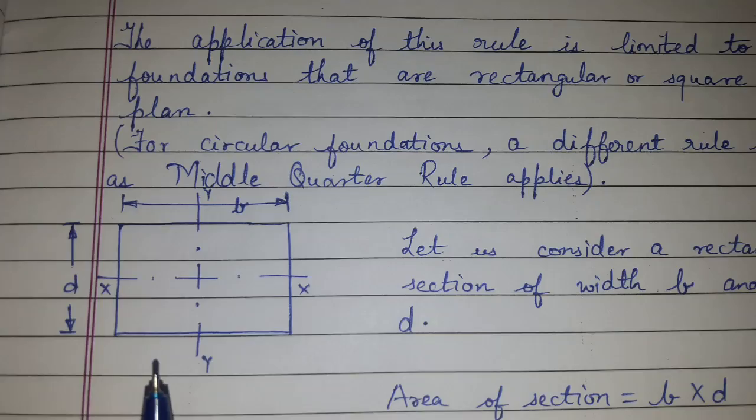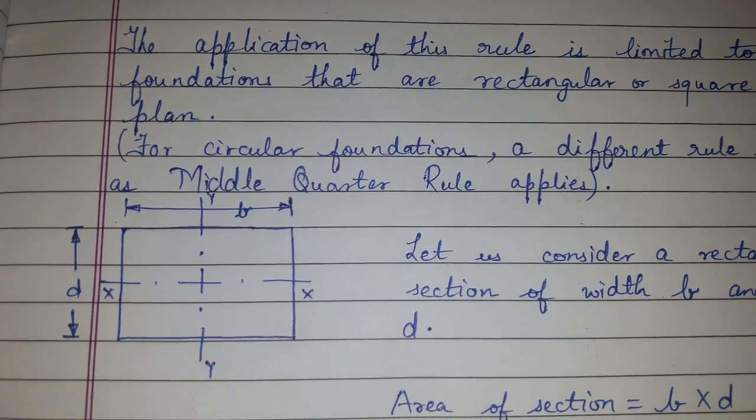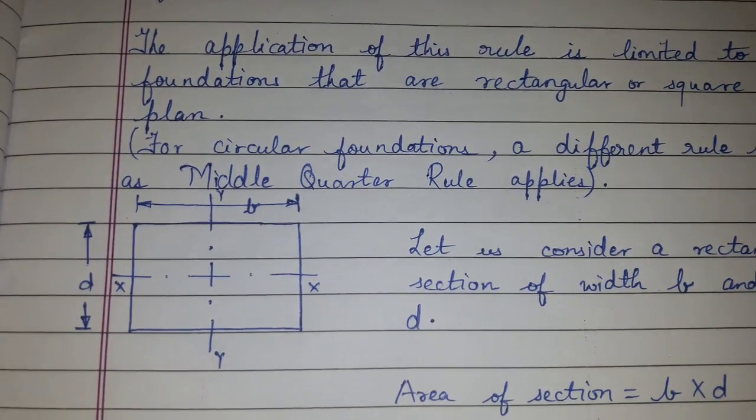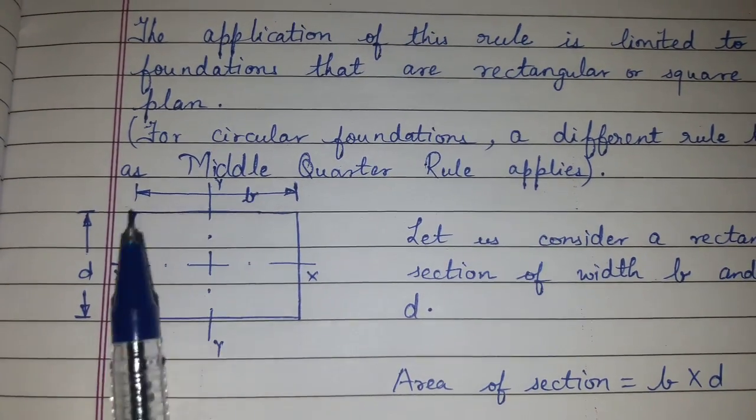Let us consider a cross section which is rectangular. The width is b and the thickness is d. So area of the section will be b into d.